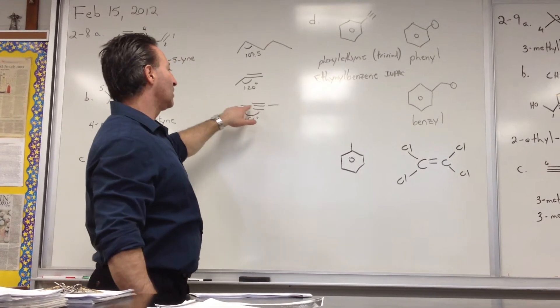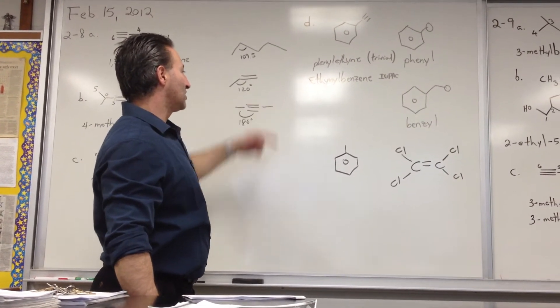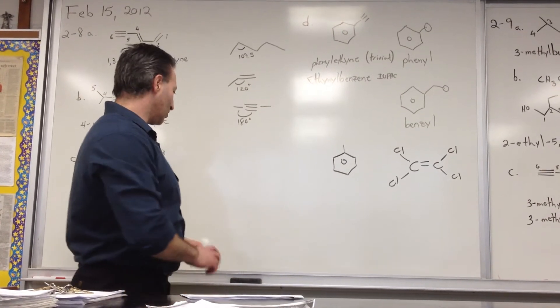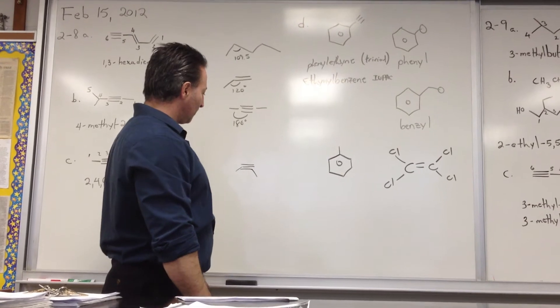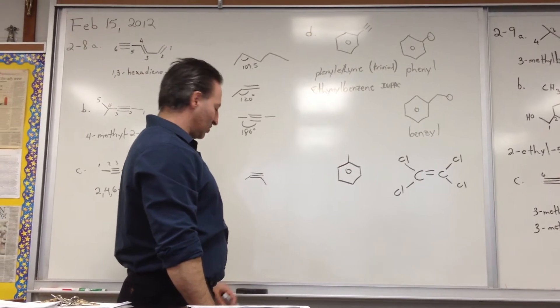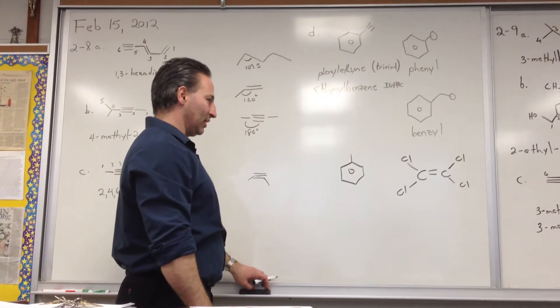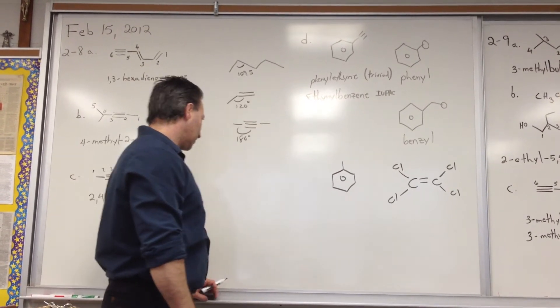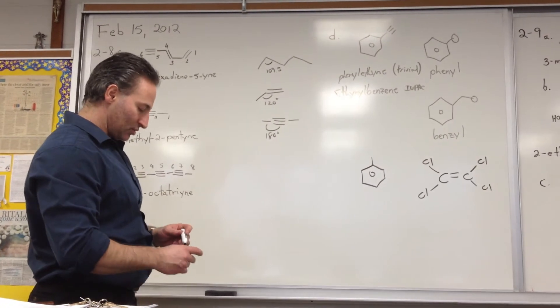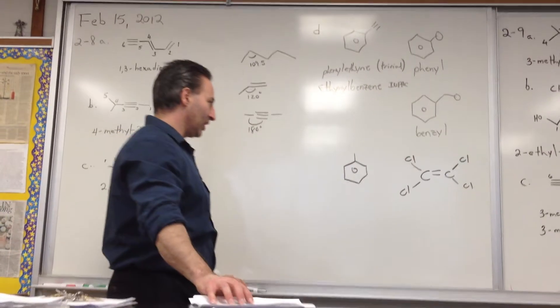So anything coming off an alkyne is going to have to stick straight out. So you don't ever draw an alkyne like this. They may exist under certain conditions, but it would be strained, and the molecules that are strained are typically not very stable. So whenever you draw an alkyne, you draw it straight across, 180 degree angle.